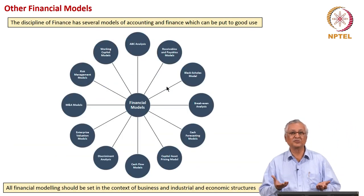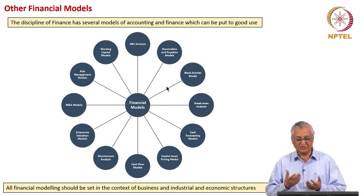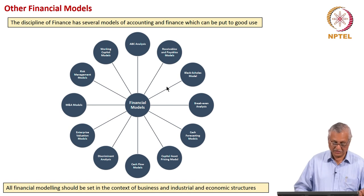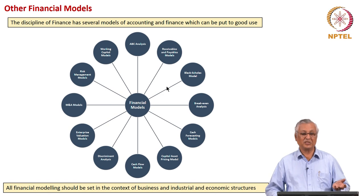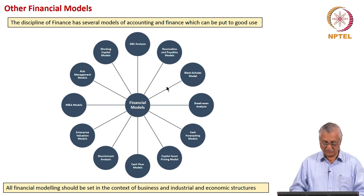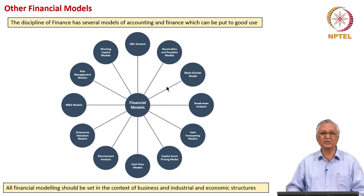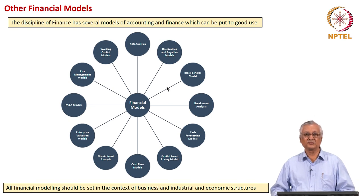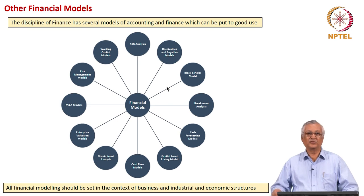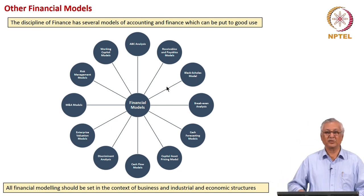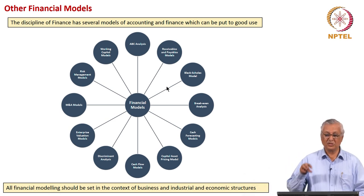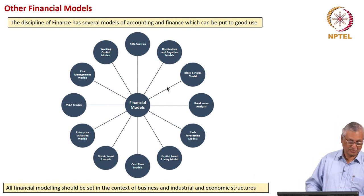There are various other financial models available — the toolkit is really vast: ABC analysis, receivables and financial models, Black-Scholes model, breakeven analysis, cash forecasting models, capital asset pricing model, cash flow models, discriminant analysis, enterprise valuation model, M&A models, risk management models, and working capital models. A whole set of financial models is available for the financial strategist to develop financial strategy. However, all these financial models must be set in the overall context of business, industrial, and economic structures. Many times companies accept projects passing through the NPV or IRR filter yet face losses mainly because cash flows were not projected properly or projects were not course-corrected when environmental changes took place. While models are extremely important, the business context and strategic context must never be lost sight of.